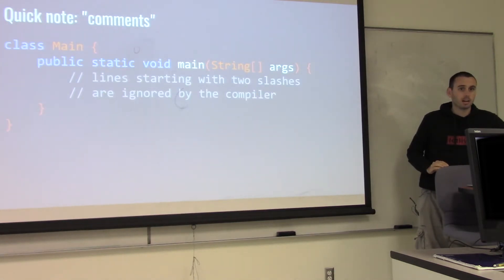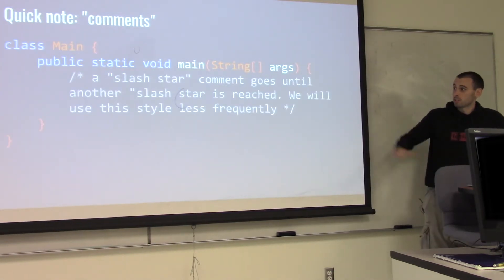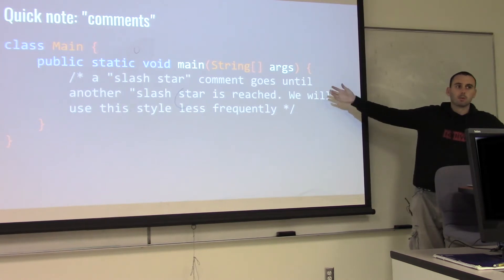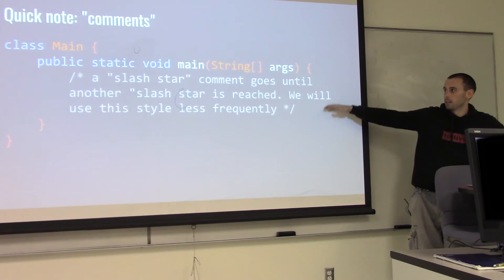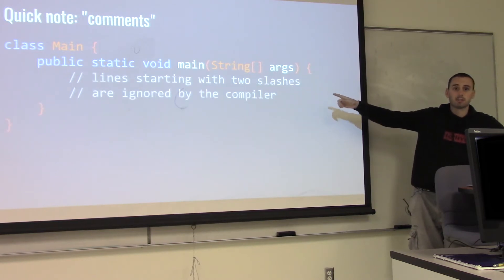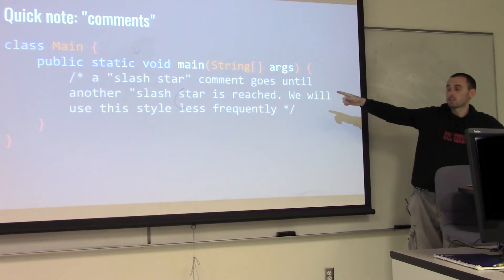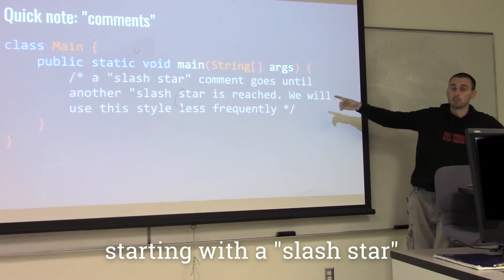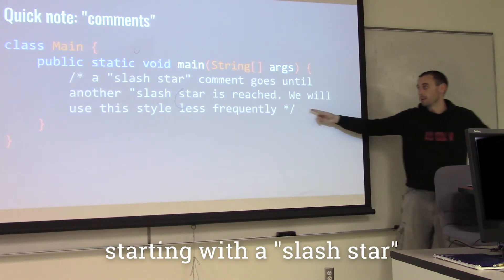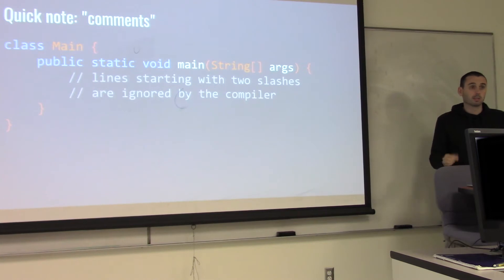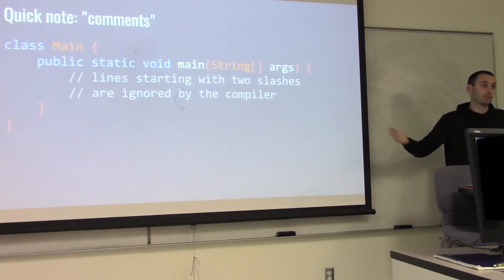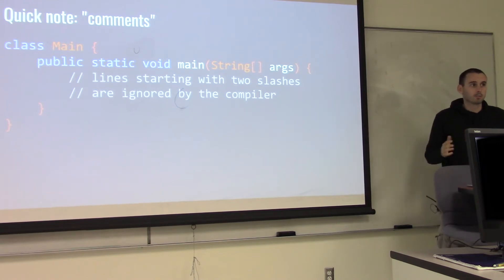Another form of comment is slash-star, which can span multiple lines. Whatever tool you're using to write code will highlight comments differently — I have them grayed out here. A line starting with two slashes is a comment that goes to the end of that line. A slash-star comment goes until the next closing star-slash. Use these comments to make notes about what you think something does, or to explain your code when sending it for review.